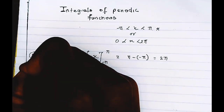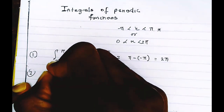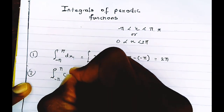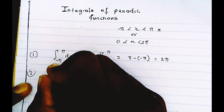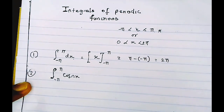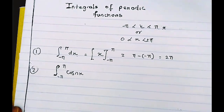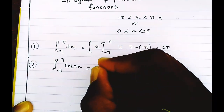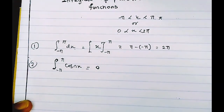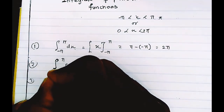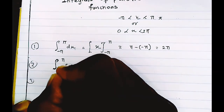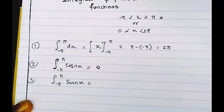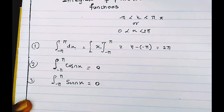Our second standard integral is the integral from minus π to π of cos(nx) dx, where n can be any value. When we integrate this using normal integration, the value is 0. Similarly, the integral from minus π to π of sin(nx) dx also equals 0.